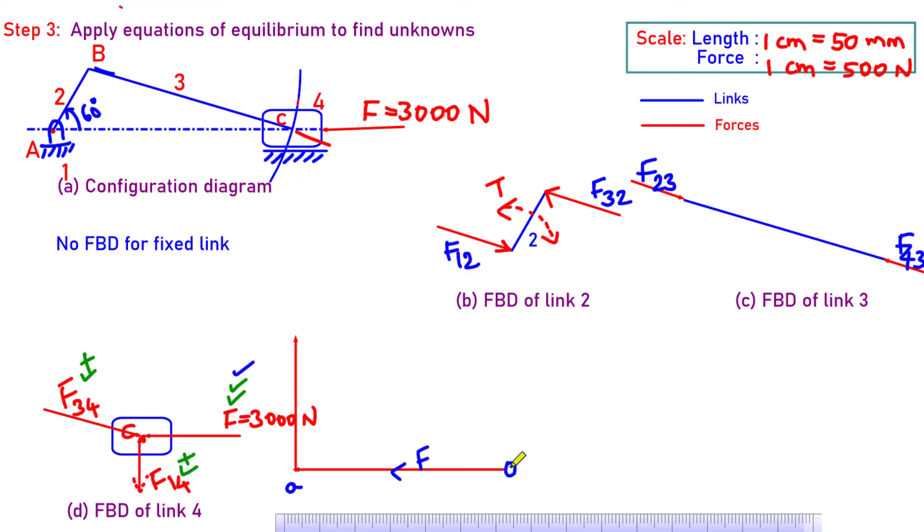What can I do? I can start from the other end of the polygon. Let me start from O. Then I will draw parallel line, parallel to link 3, because we know that F34 is parallel to link 3. I am going to draw from there. I am going to draw a parallel line. That's it. We got that. It intersects here.